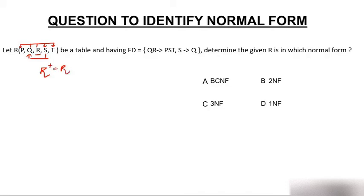Let's find the closure of R. The closure of R will have only R — with QR we can determine PST but I have only R, and with S we can determine Q but I have only R. So with R alone you can determine only R, meaning R alone is not a candidate key. Let's make combinations of R: RQ and RS.